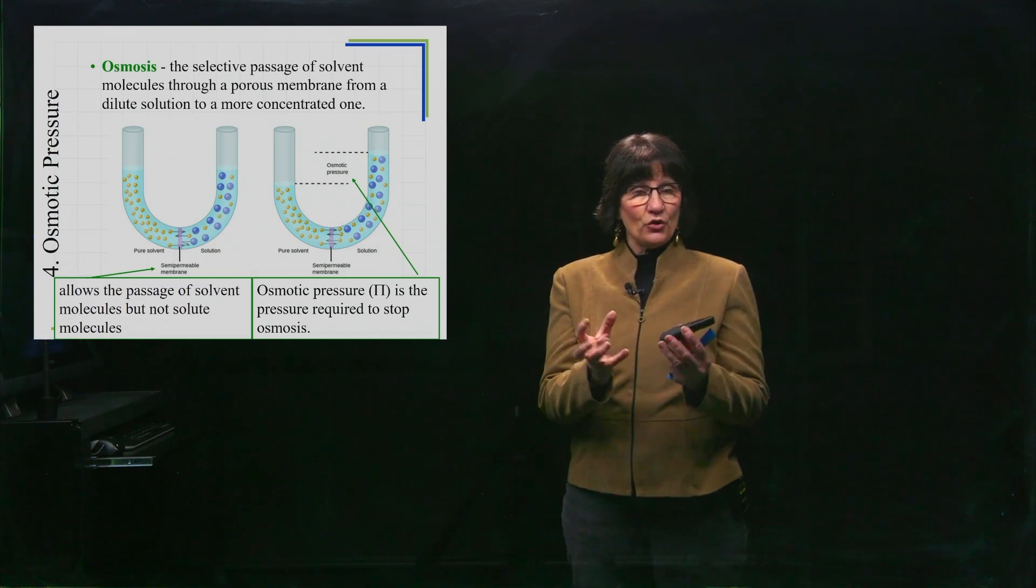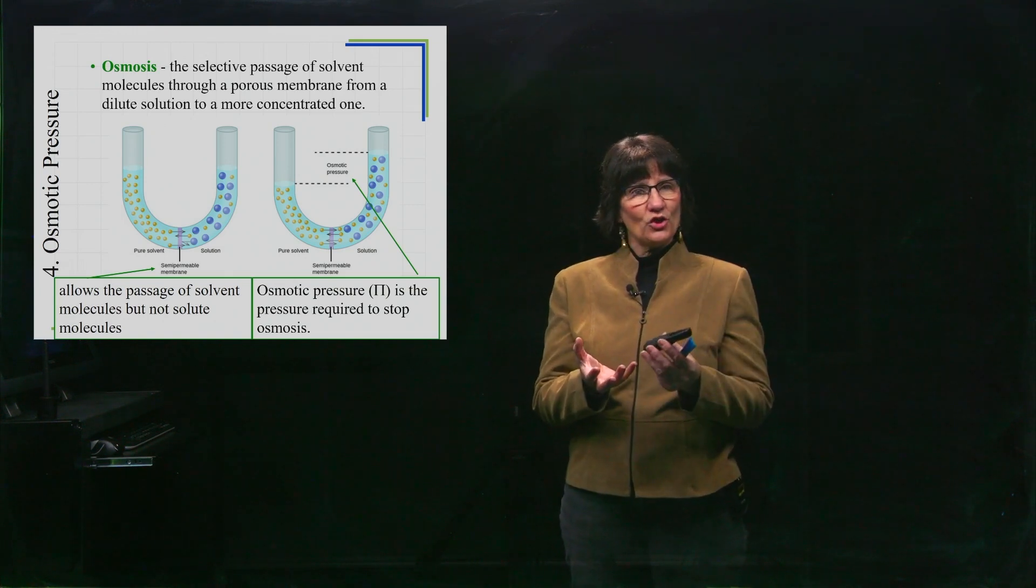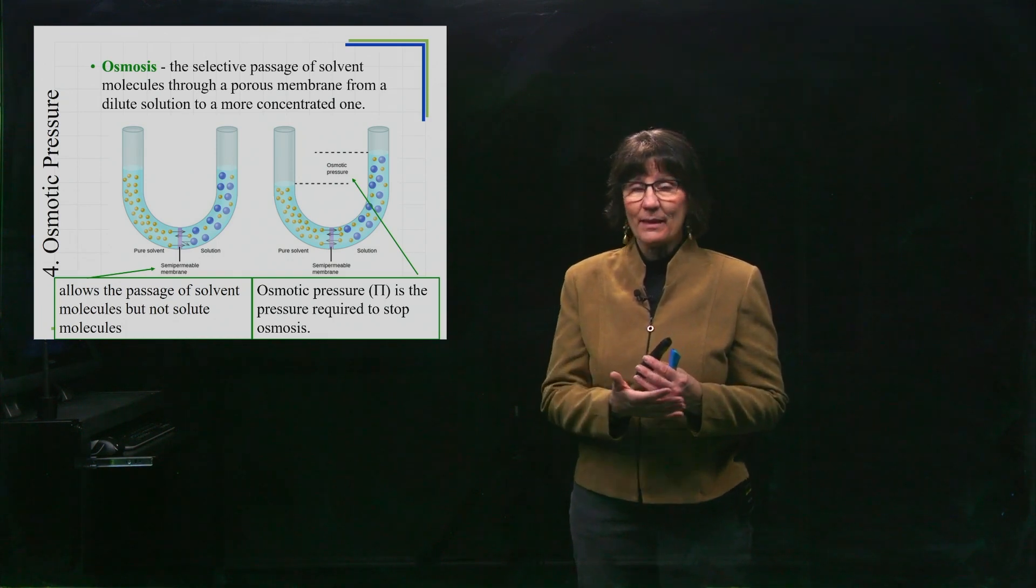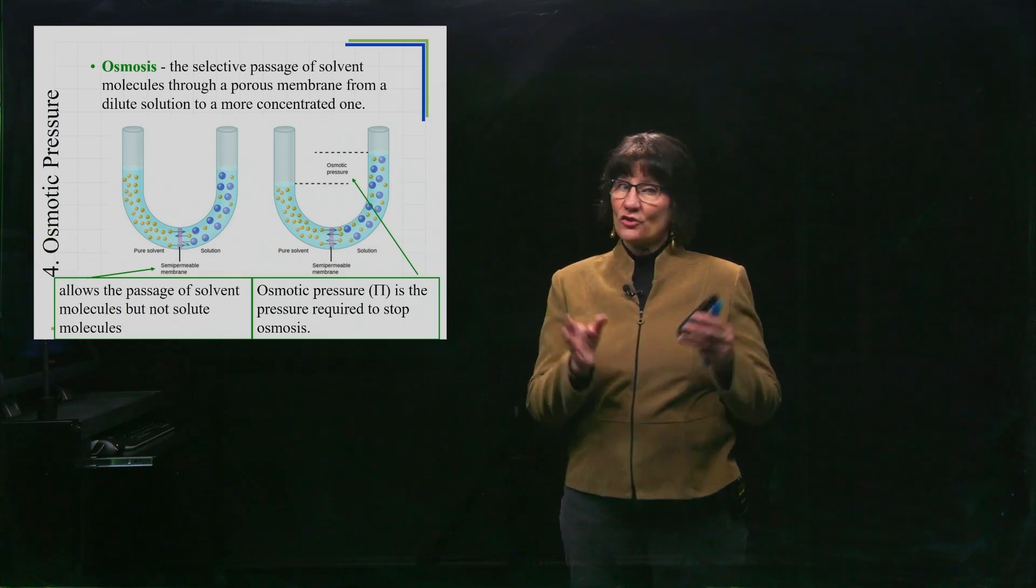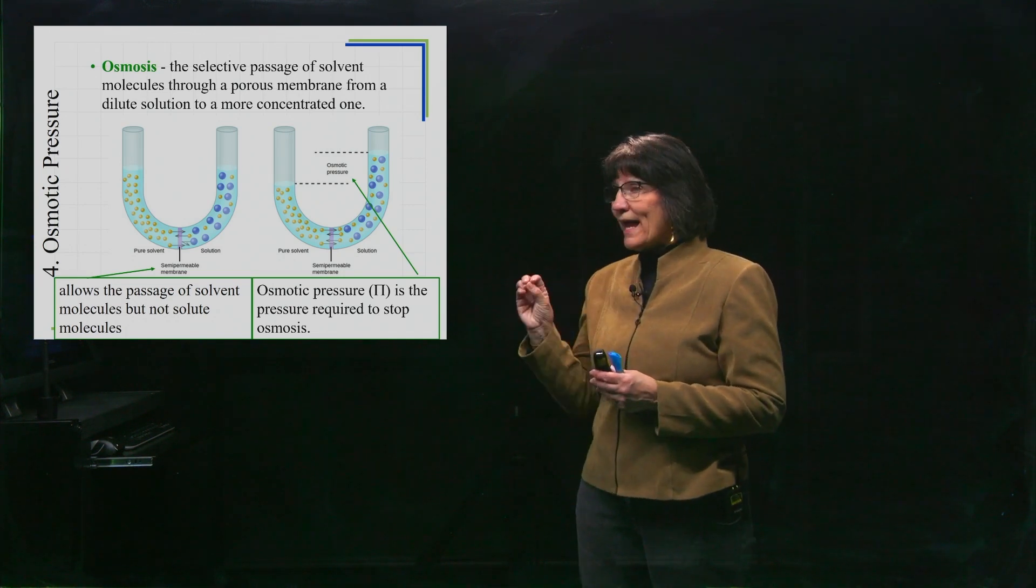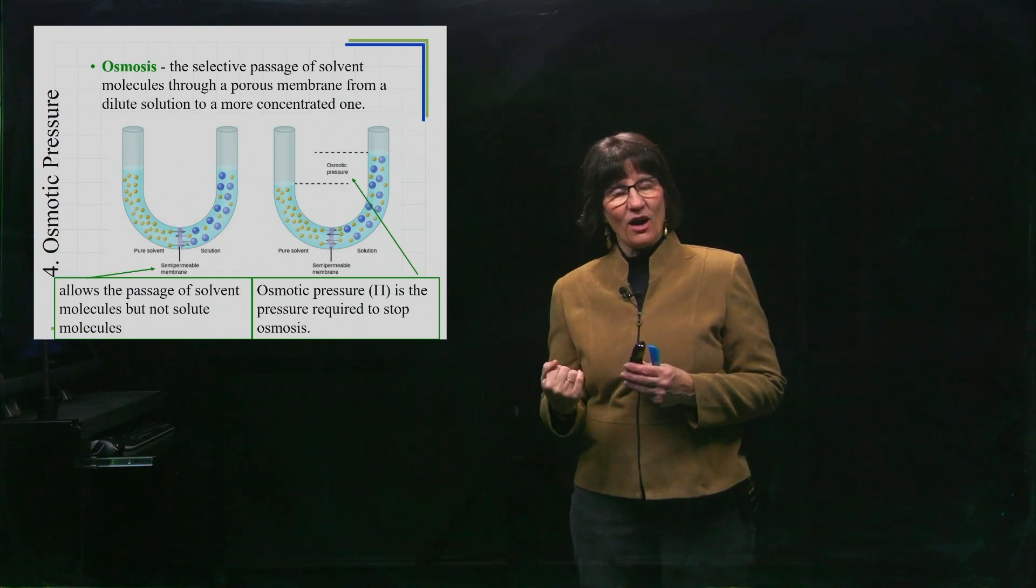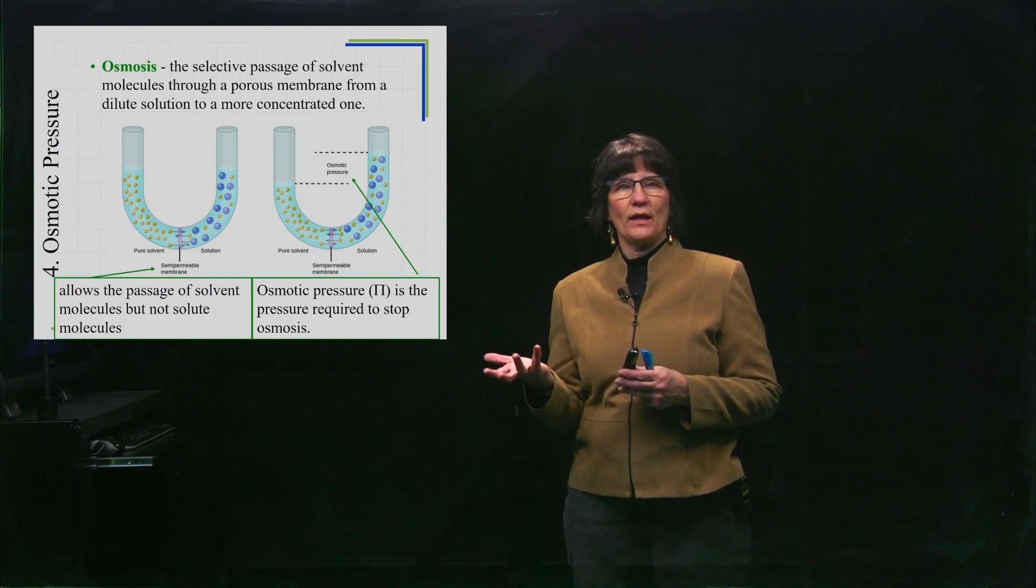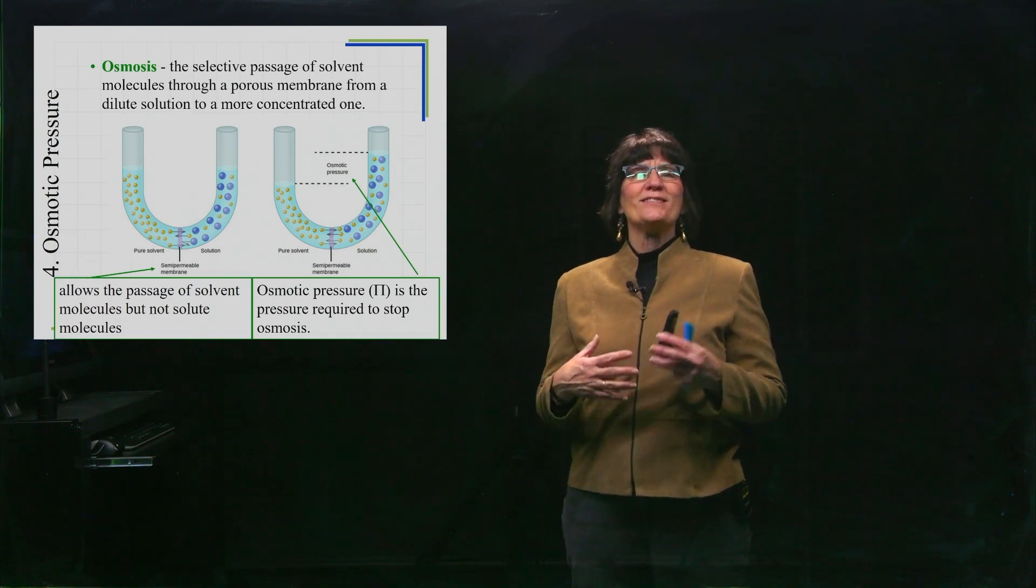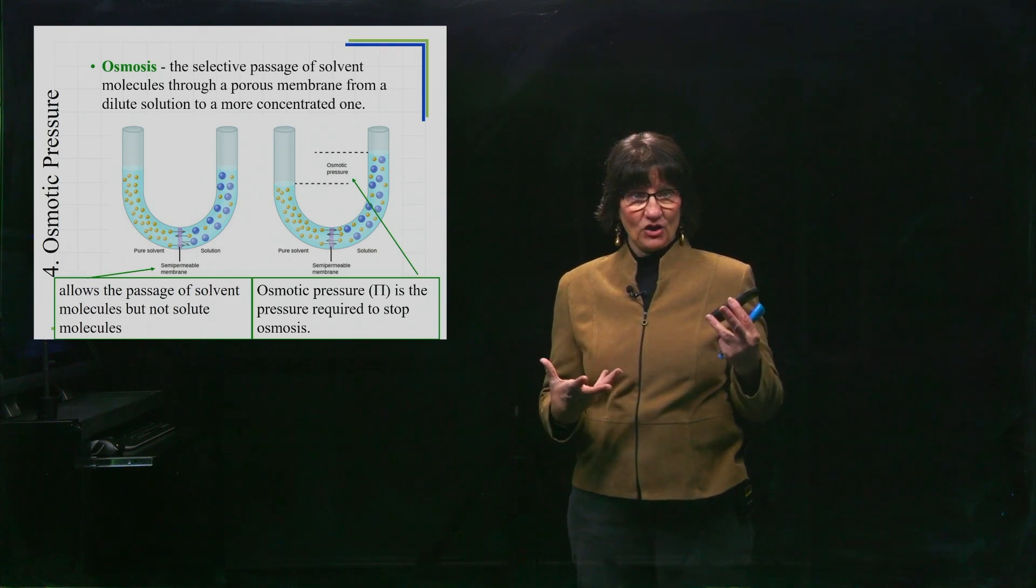So you take two solutions, one that's pure solvent and one that's a solution, and the solvent can migrate from one side to the other across that membrane. Now they can go in both directions, there's solvent on both sides, but the way it tends to go is from the less concentrated, which if it was pure solvent that would be less concentrated, towards the more concentrated. What it's trying to do is dilute out the more concentrated one until they can match.